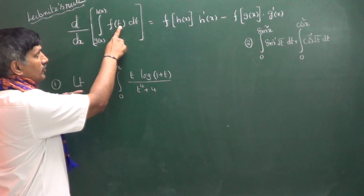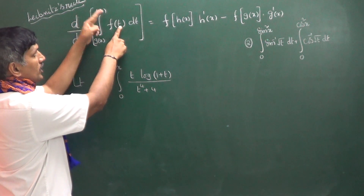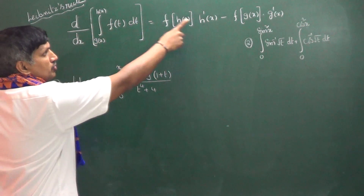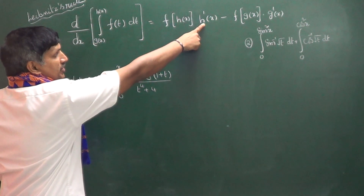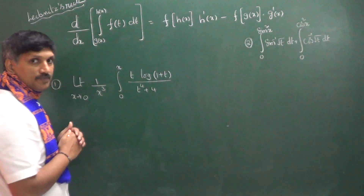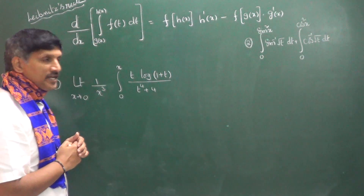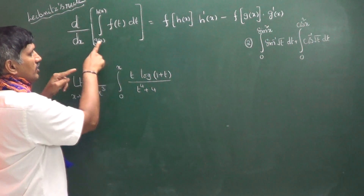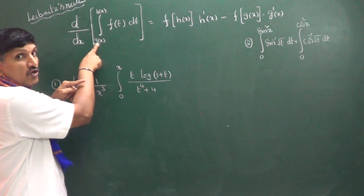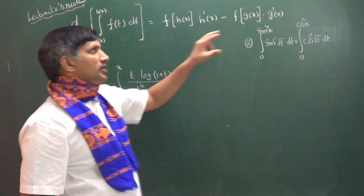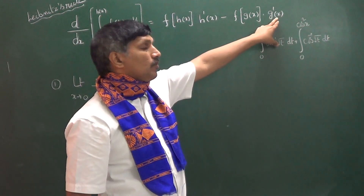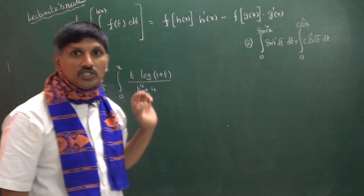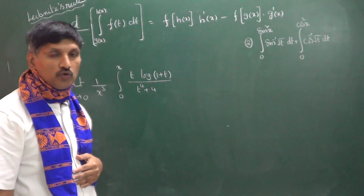In place of t we substitute the upper limit, multiplied by the upper limit's differentiation, minus — in place of t we substitute the lower limit, multiplied by the lower limit's differentiation. That is the Leibniz rule.